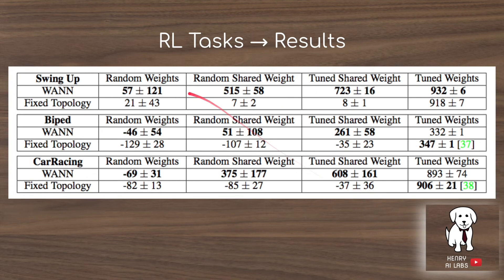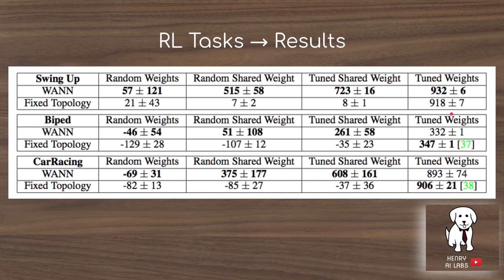These are the results across different reinforcement learning tasks for the weight agnostic neural network compared to a fixed topology network. Most interestingly, random shared weight performs terribly for fixed topology networks, whereas the weight agnostic neural network search algorithm makes this idea work. When you tune the weights of the randomly initialized topology, you get similar performance with both networks, though the weight agnostic network isn't able to beat full gradient descent weight tuning completely.